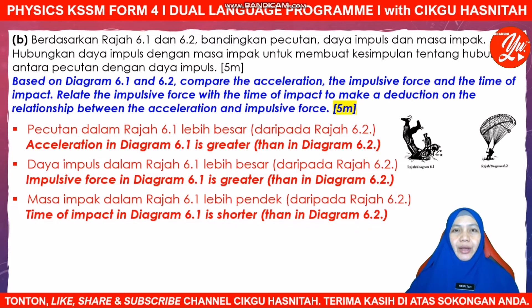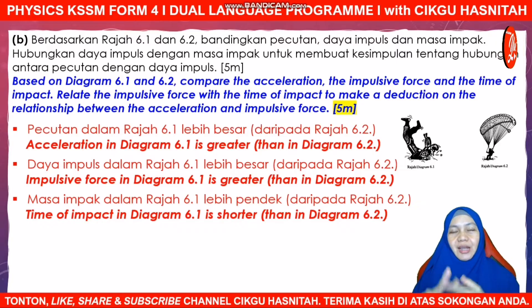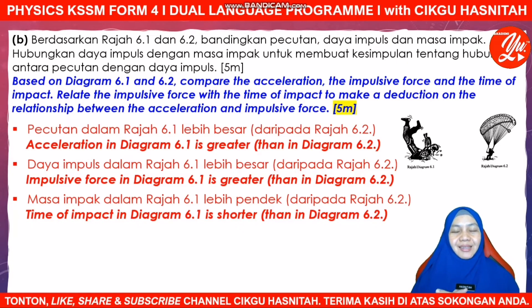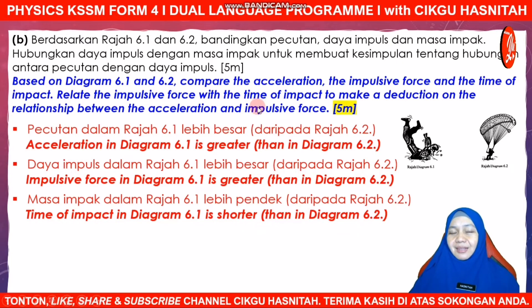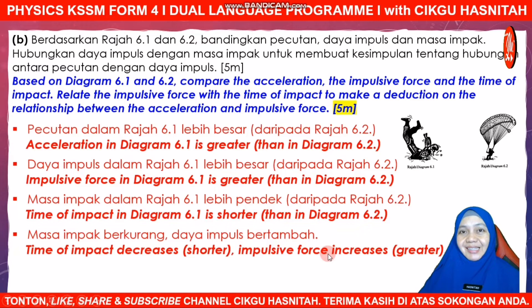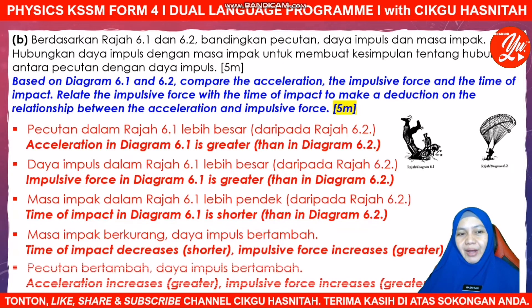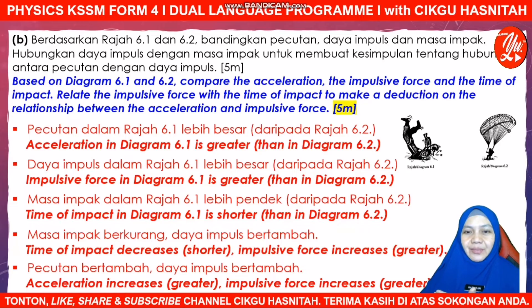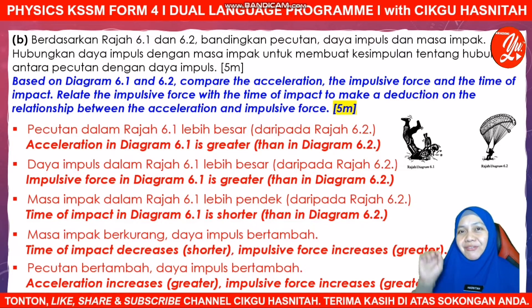Your first three marks come from comparing acceleration, impulsive force, and time of impact. For the fourth mark — the relationship — you can say: when time of impact decreases or is shorter, impulsive force increases or is greater. For the fifth mark, relate acceleration and impulsive force: when acceleration increases or is greater, impulsive force increases or is greater. Now you have five marks.